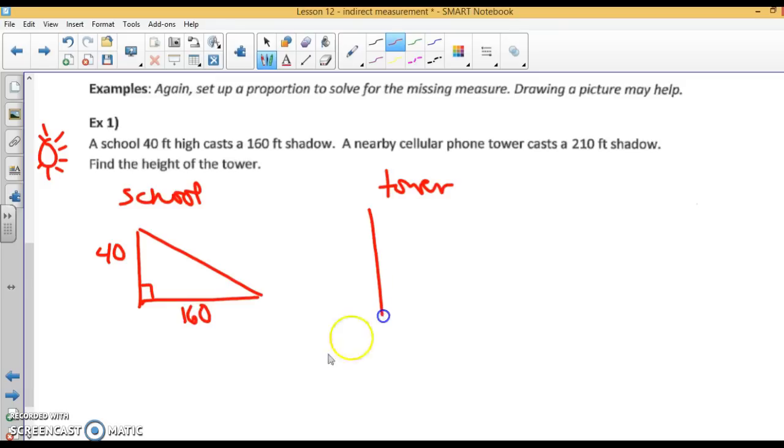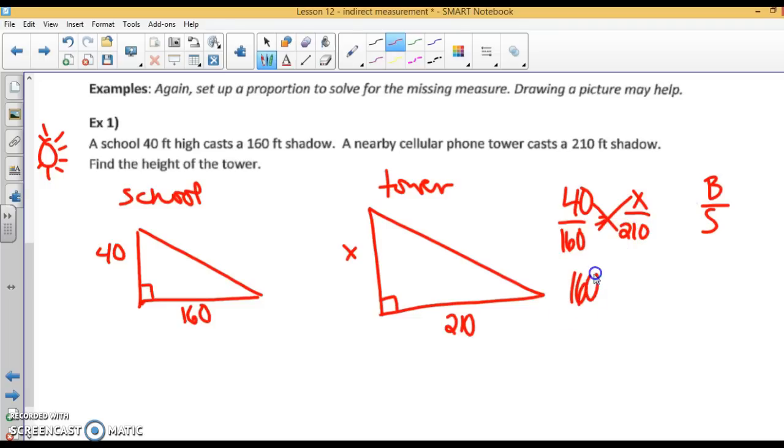Here's our tower. As the sun is still shining down at the exact same angle, the shadow of the tower is 210. We want to know how tall the tower is, x. I highly recommend drawing a diagram. We can set up our proportion: 40 over 160, the building over the shadow, equals x over 210. When I cross-multiply, I get 160x equals 8,400. Divide both sides by 160. And I end up with x equals 52.5 feet.